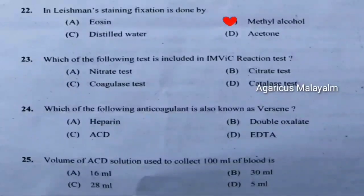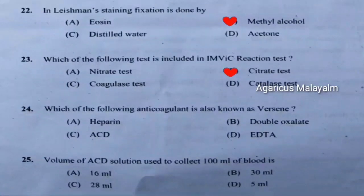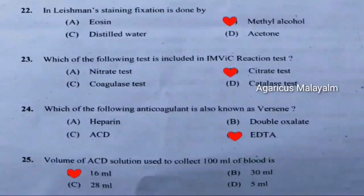Twenty-third question: Which of the following test is included in IMVIC reaction test? Correct answer is option B — citrate test. Twenty-fourth question: Which of the following anticoagulant is known as versene? Correct answer is option D — EDTA. Twenty-fifth question: Volume of ACD solution used to collect 100 ml of blood is. Correct answer is option A — 60 ml.